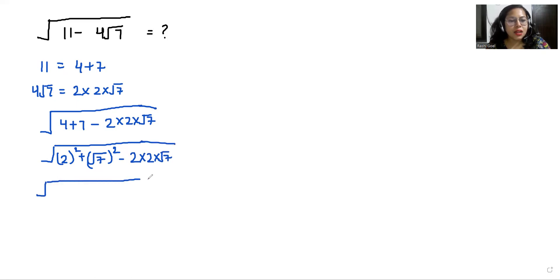Now it becomes an identity of (a - b)² which equals a² + b² - 2ab. Here a is 2 and b is √7.